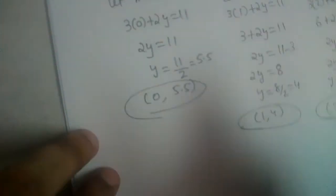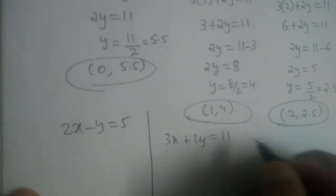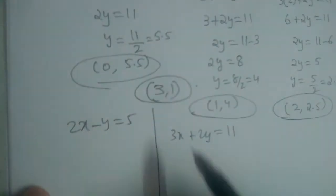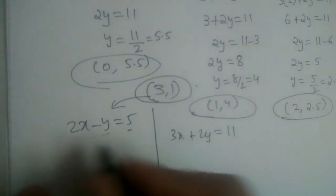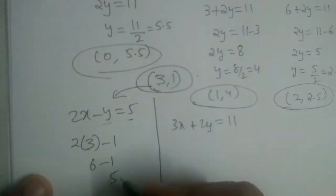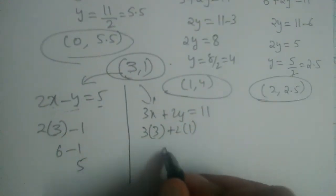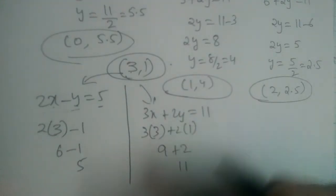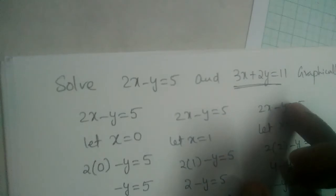We can verify by substituting x equal to 3 and y equal to 1 into both equations. For 2x minus y equal to 5: 2 into 3 minus 1 gives 6 minus 1 which is 5 — correct. For 3x plus 2y equal to 11: 3 into 3 plus 2 into 1 gives 9 plus 2 which is 11 — correct. Both sides are equal, confirming our solution.